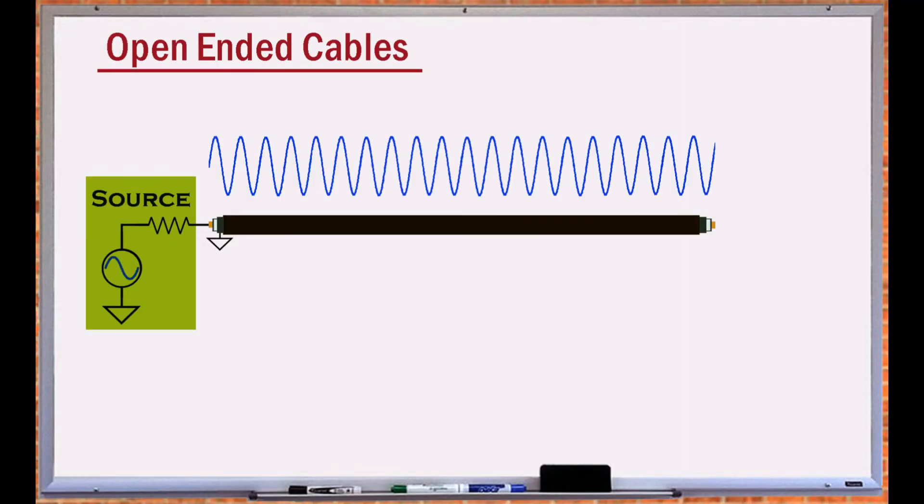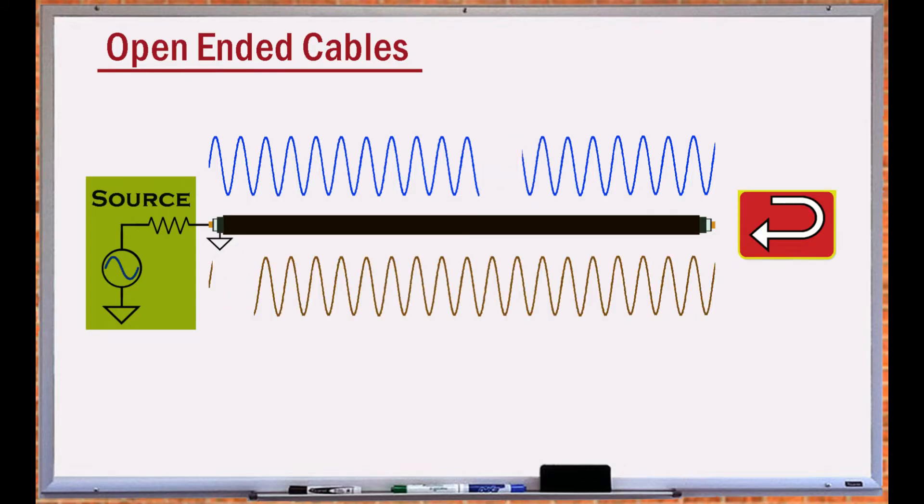In a similar manner, when an electrical wave travels through a cable and encounters an open circuit, the wave reflects back to the source.